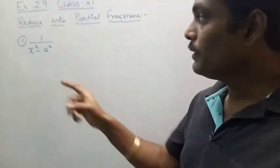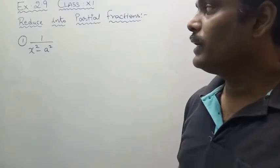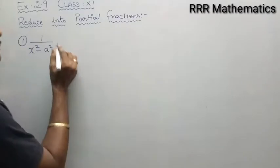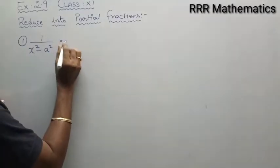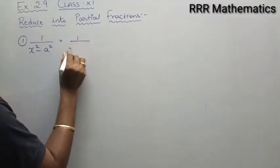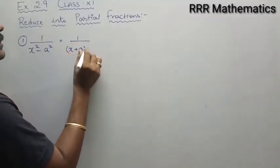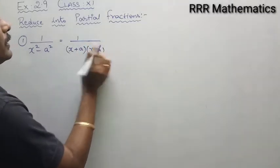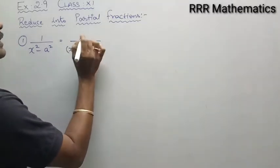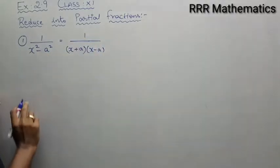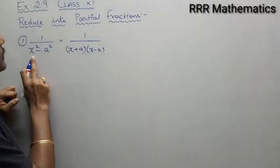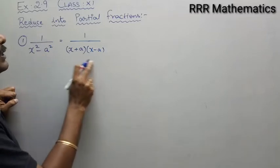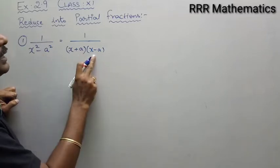We have x squared minus a squared in the denominator. This is in the form of a squared minus b squared, so I can write this as x plus a times x minus a. So 1 divided by x squared minus a squared can be factorized using the identity a squared minus b squared equals a plus b times a minus b, giving x plus a times x minus a.